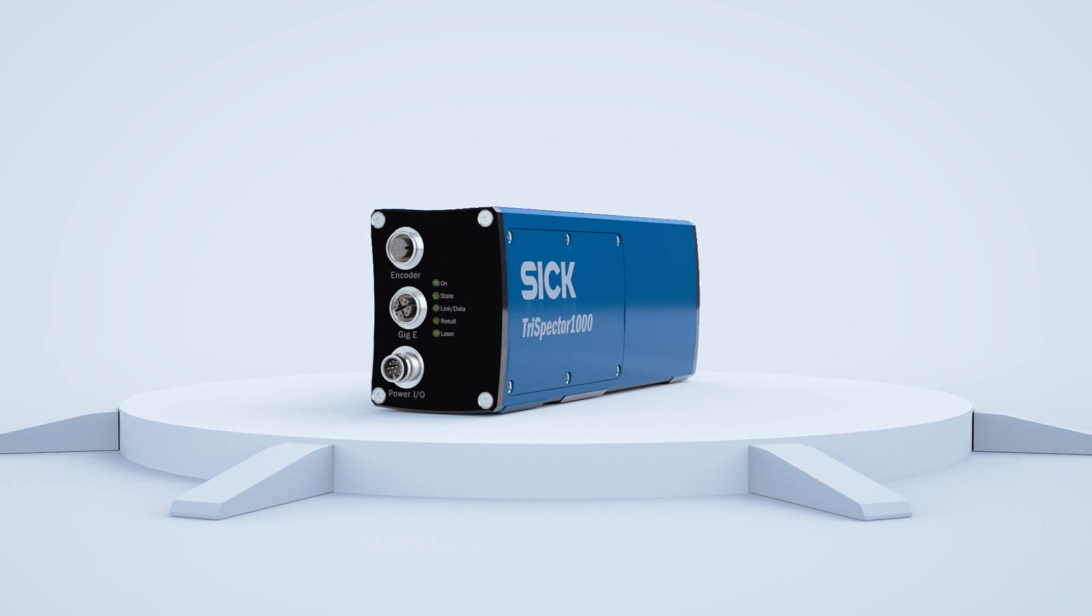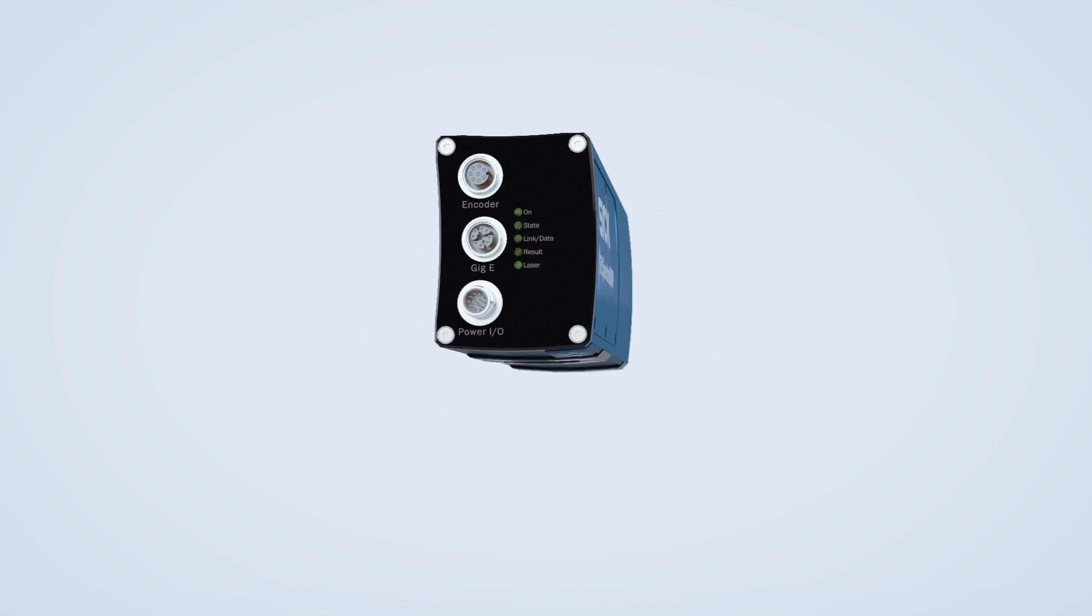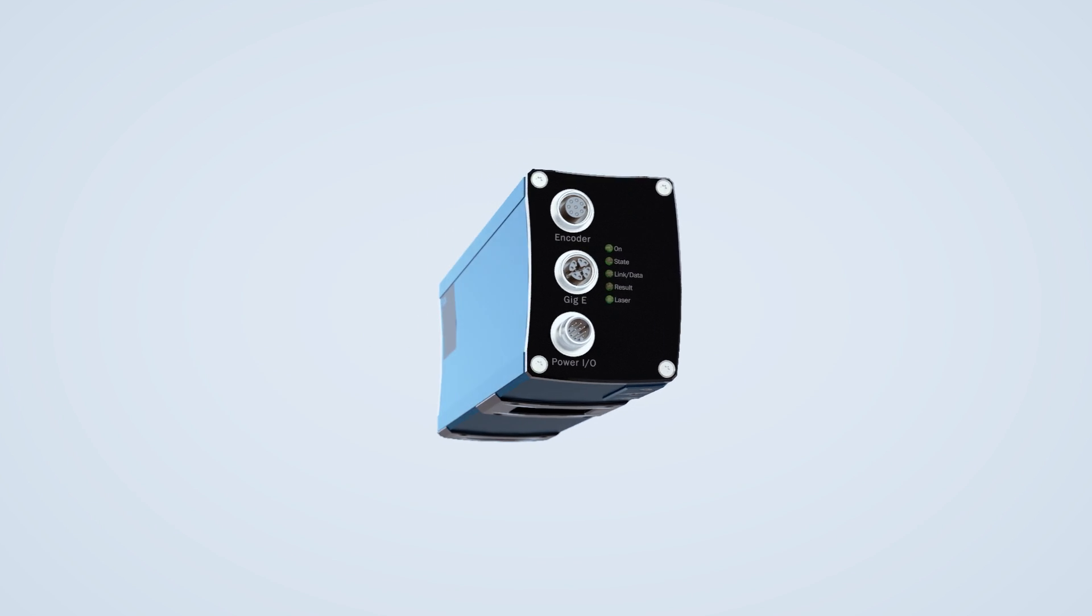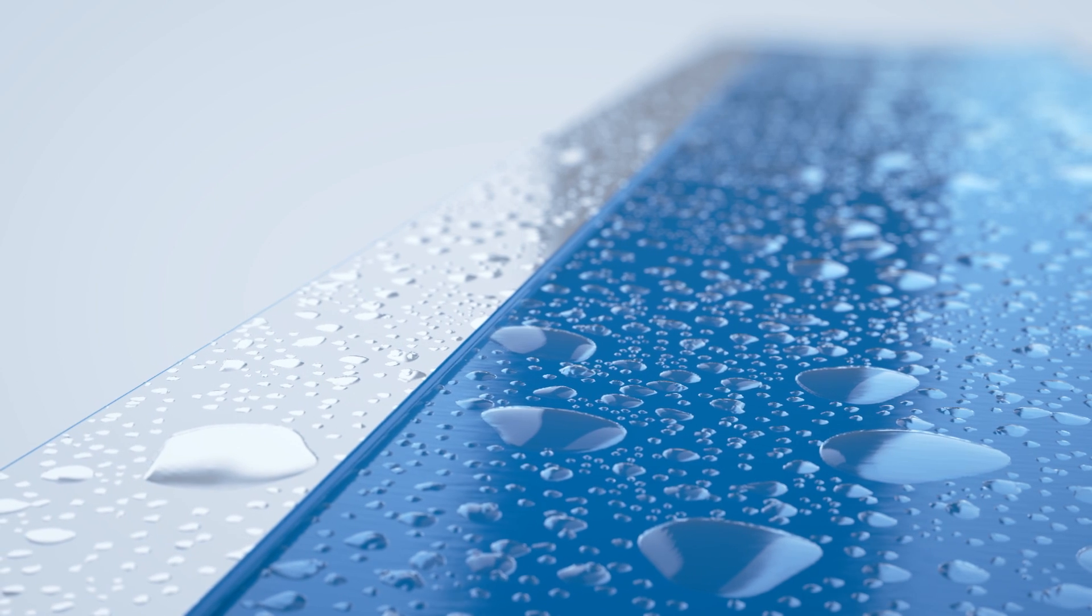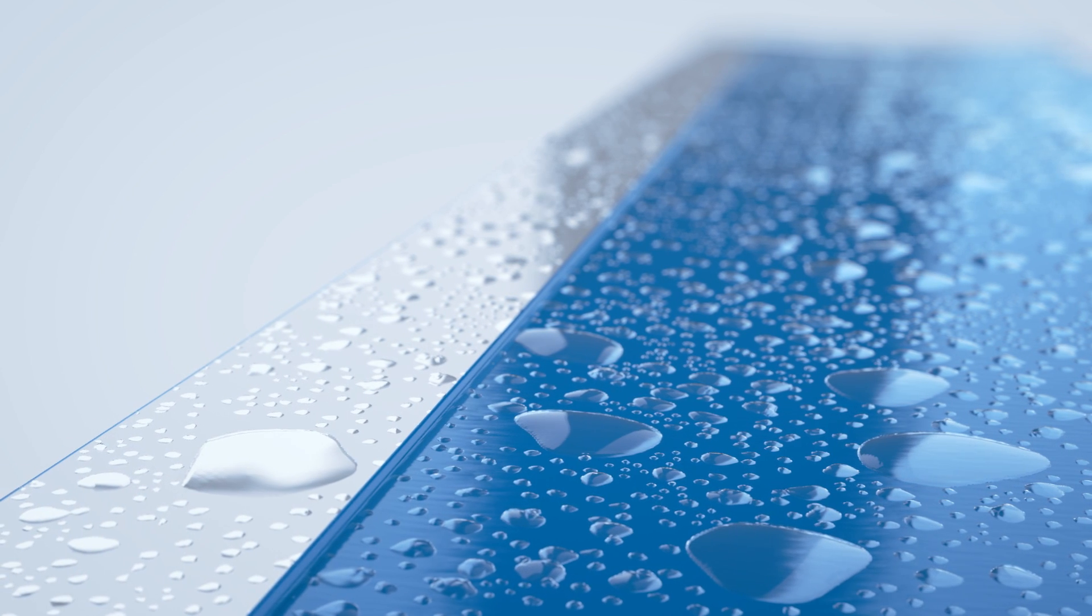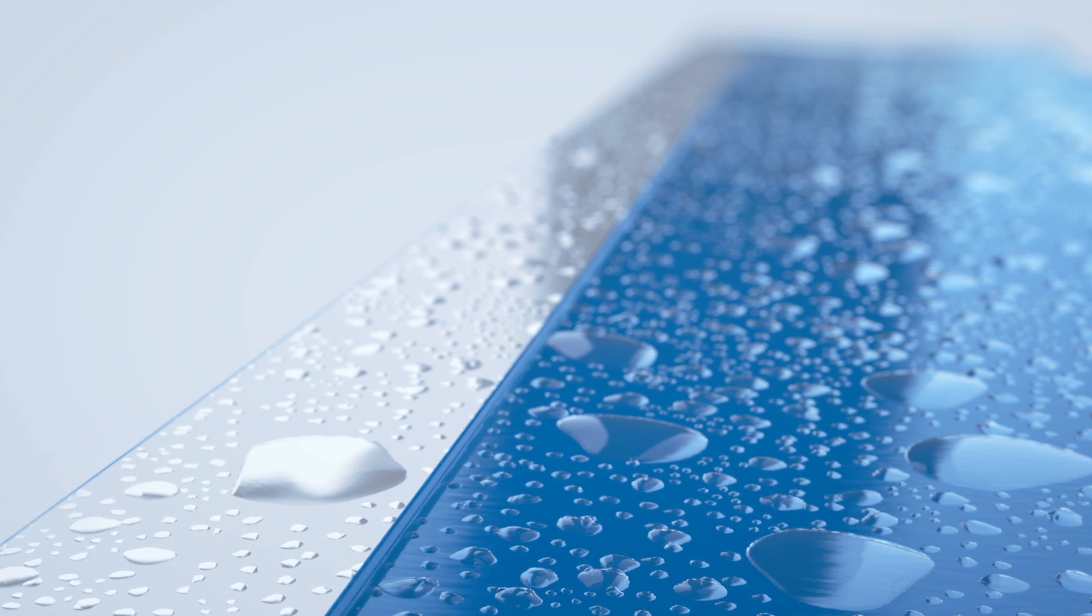TriSpector 1000 is an intuitive stand-alone configurable sensor for cost-efficient 3D inspections. The rugged housing makes it ideal for challenging environments, for example, food processing.